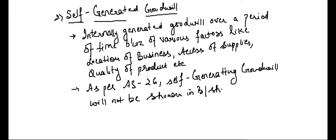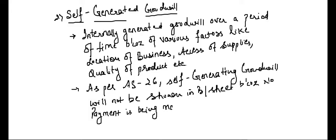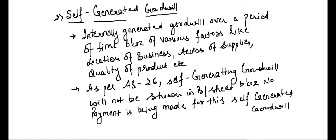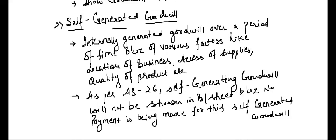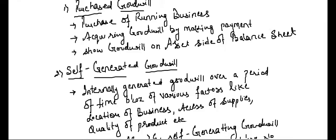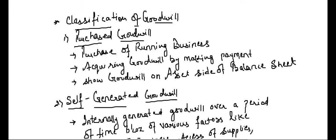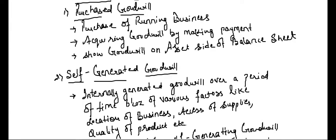Why will self-generated goodwill not be shown in the balance sheet? Because no payment is being made for this self-generated goodwill. As per Accounting Standard 26, self-generated goodwill will not be shown in the balance sheet, whereas the purchased goodwill is to be shown in the balance sheet on the asset side. So these are the two types of goodwill: purchased goodwill and self-generated goodwill.